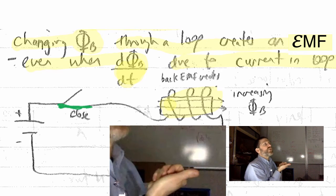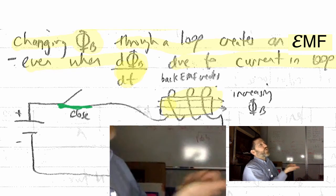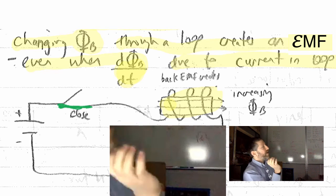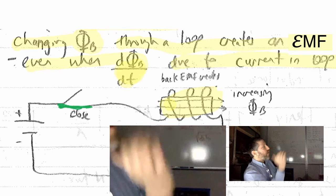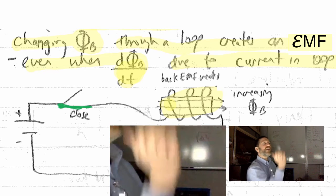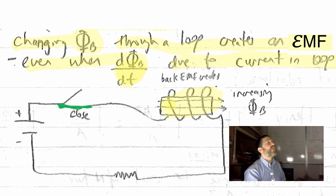Nature does not like a changing magnetic flux. So it will try to oppose that. To the flux. And then it will create an EMF that is trying to go this way. Now you guys, is that in the same direction? Or is that opposite to the EMF caused by the battery? That is in the opposite direction of the EMF caused by the battery.